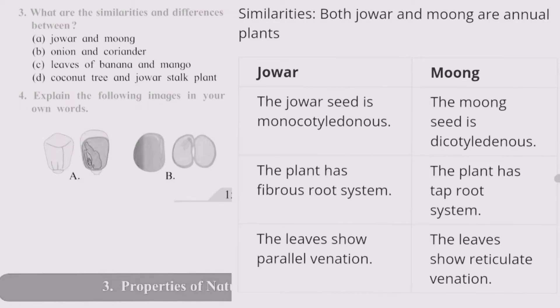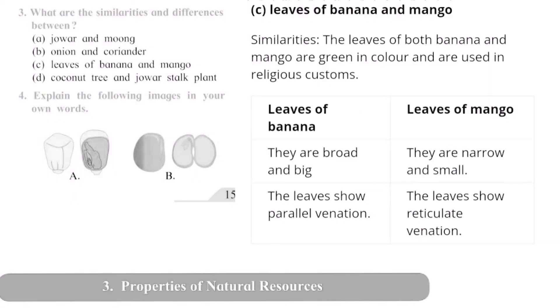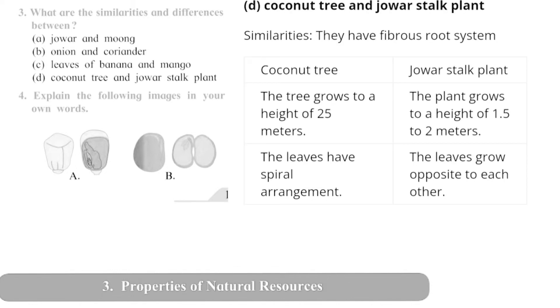Question number 3: What are the similarities and differences between: a) jowar and moong, b) onion and coriander, c) leaves of banana and mango, d) coconut tree and jowar stalk plant.